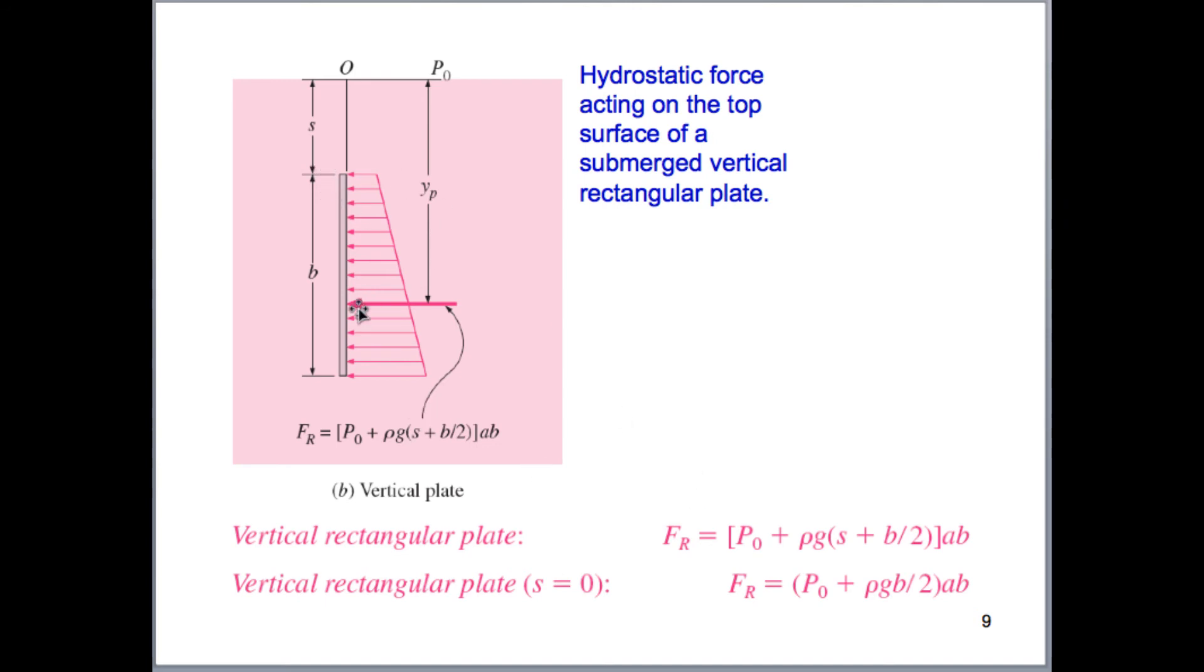So if this was totally upright, we would perform our analysis like this. If s equals zero, or if the plate is brought up all the way to the surface, we would eliminate that. So it would just be rho, g, h, h sub c.